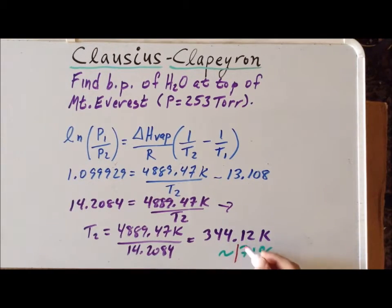So, while water has a boiling point at atmospheric pressure of 760 torr of being 100 degrees Celsius, its boiling point under a pressure of 253 torr is going to be reduced down to 71 degrees Celsius.